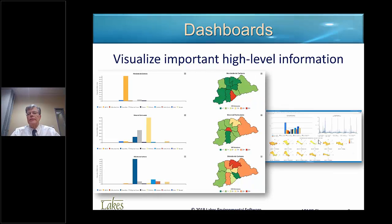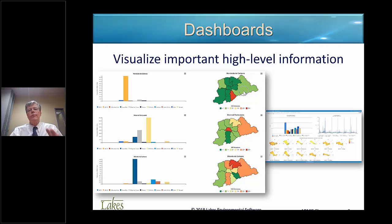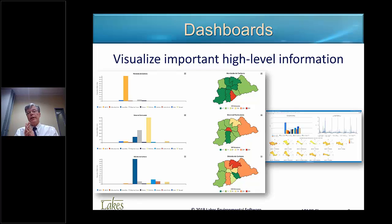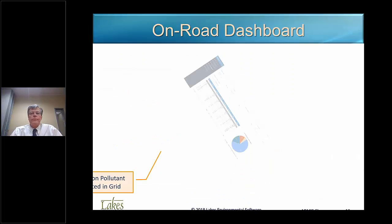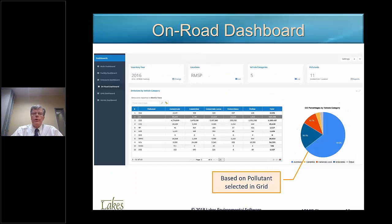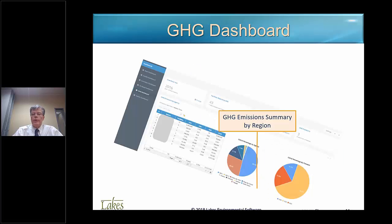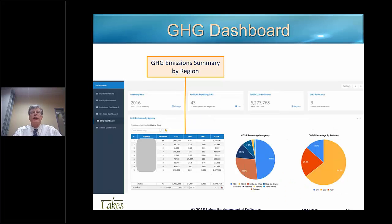The dashboards — you can see examples here with bar charts. We also do them with different jurisdictions. This system works for companies and also for regulatory agencies. When it's regulatory agencies, it's very interesting to see the jurisdictions. For example, for the state of Texas, you could have all the counties with different colors, with the highest emitters in red and others with different colors for assessment. We also have an on-road dashboard and a greenhouse gases dashboard for those locations in the world that need to report greenhouse gases.